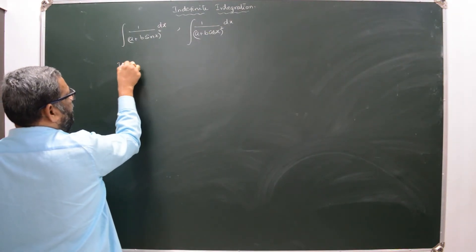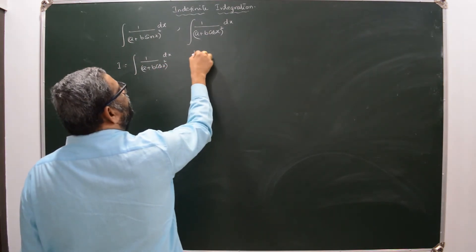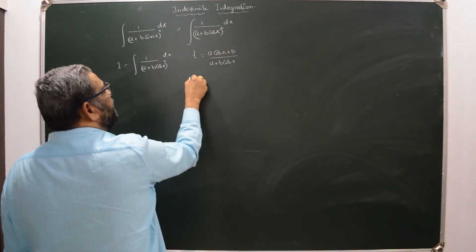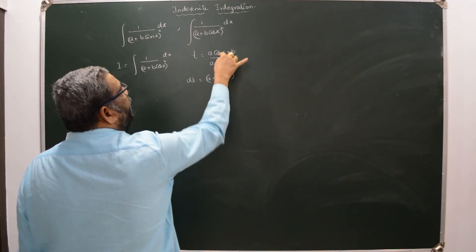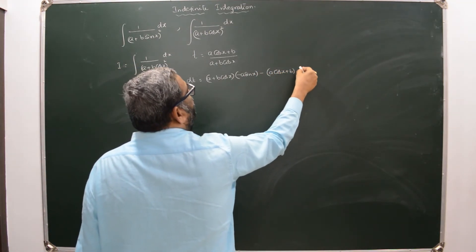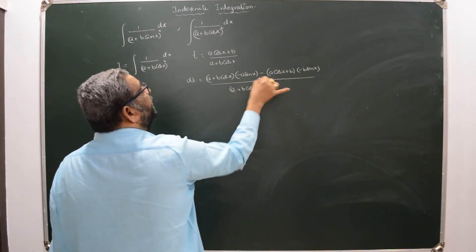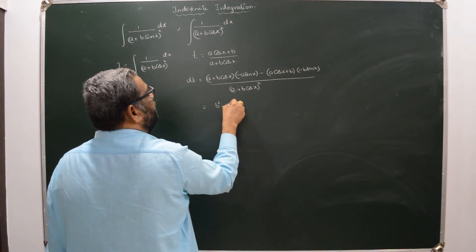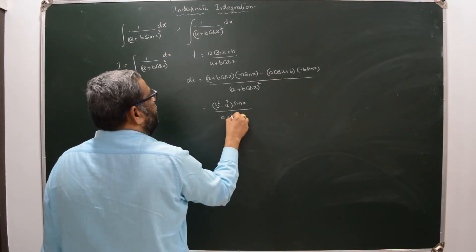Now I will discuss the model of ∫1/(a + b·cosX)² dx. Here we substitute t = (a·cosX + b)/(a + b·cosX). We compute dt = [(a + b·cosX)·(-a·sinX) - (a·cosX + b)·(-b·sinX)] / (a + b·cosX)², which simplifies to (b² - a²)·sinX / (a + b·cosX)².